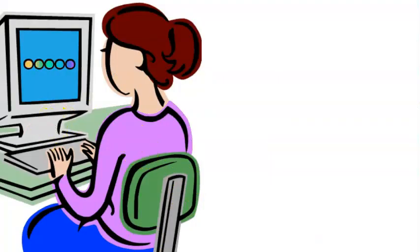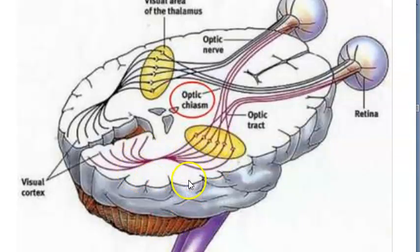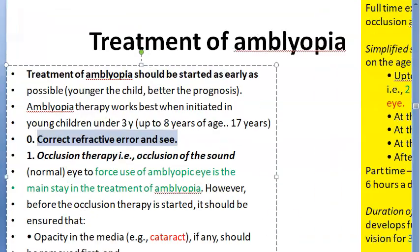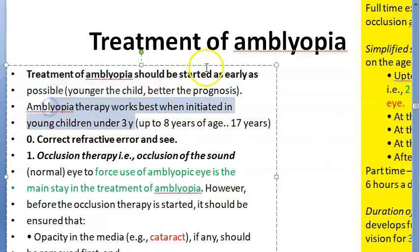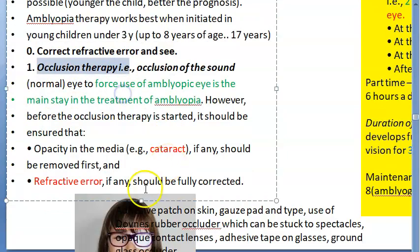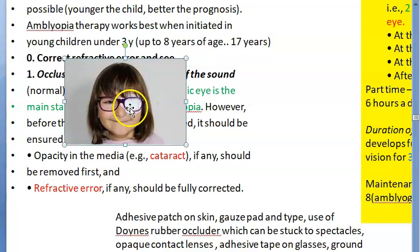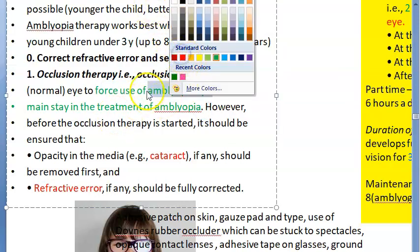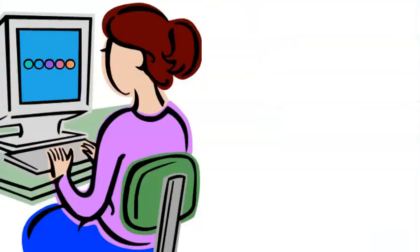Moving on to treatment of amblyopia. First, correct whatever refractive error, cataract, or corneal opacity is present. Treatment should ideally be started under three years of age — up to eight years it is possible, and up to 17 years you can try, but earlier is better with better prognosis. Then occlusion therapy: the sound (good) eye is patched, forcing the amblyopic eye to learn to see.